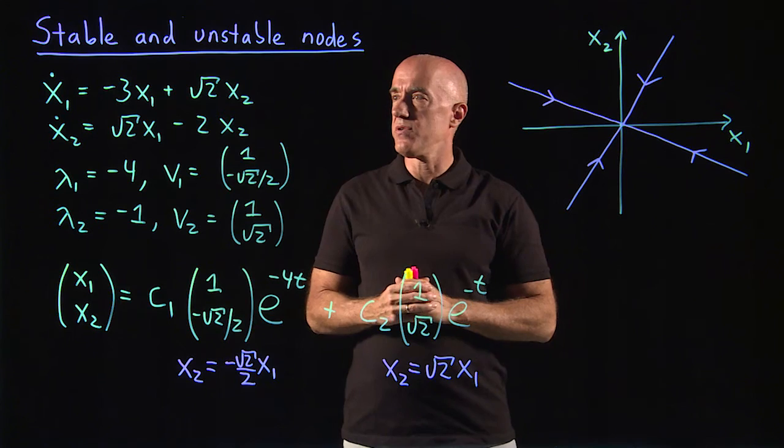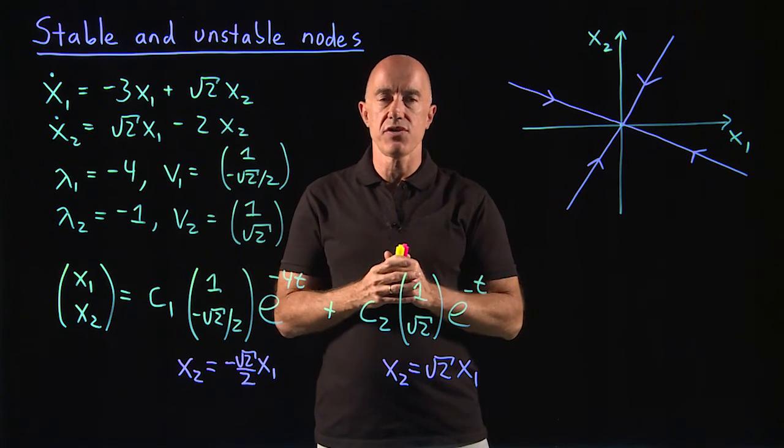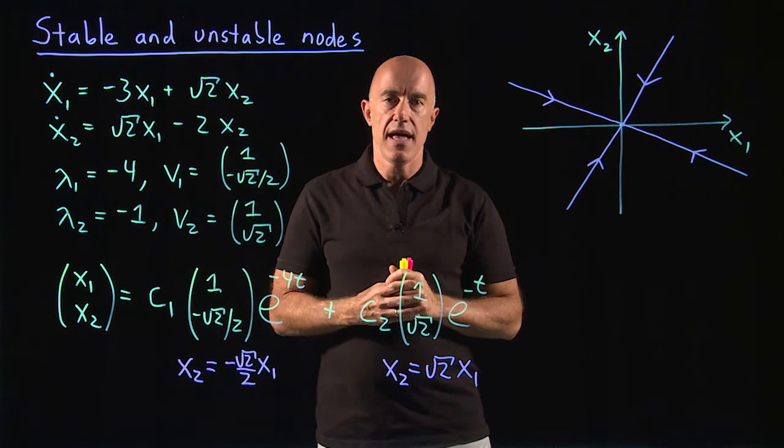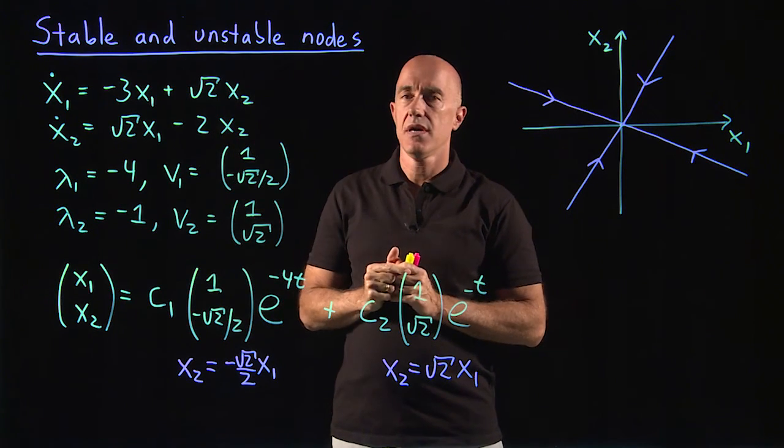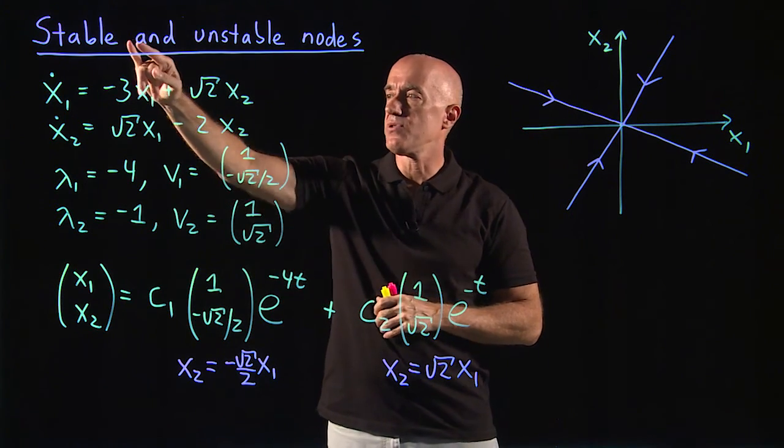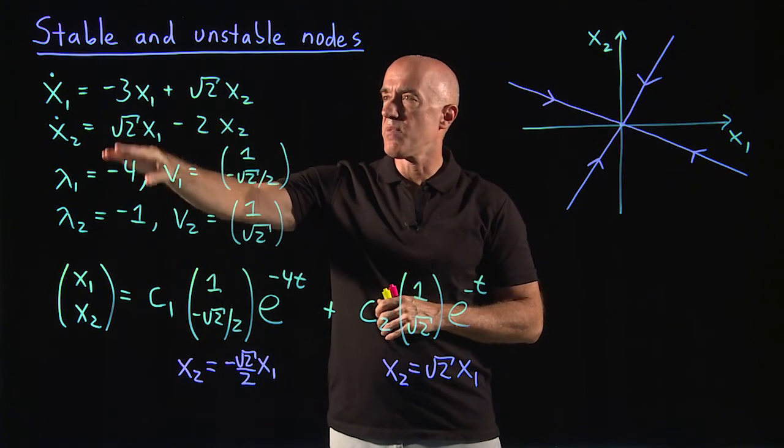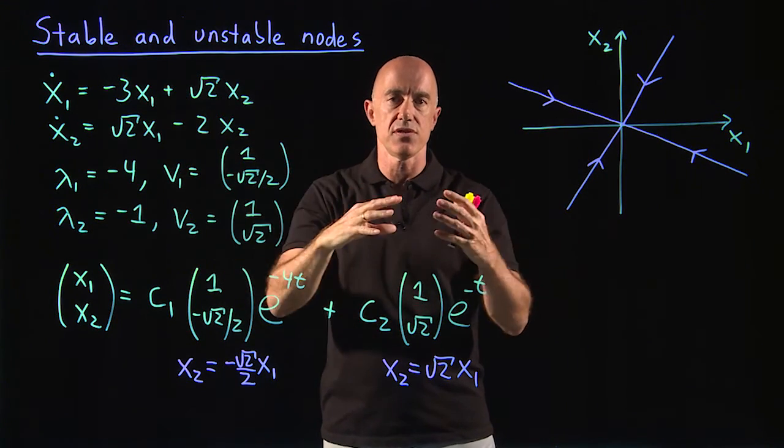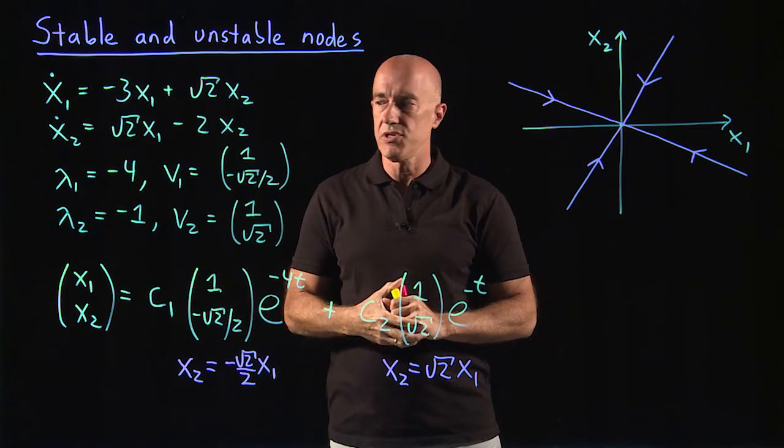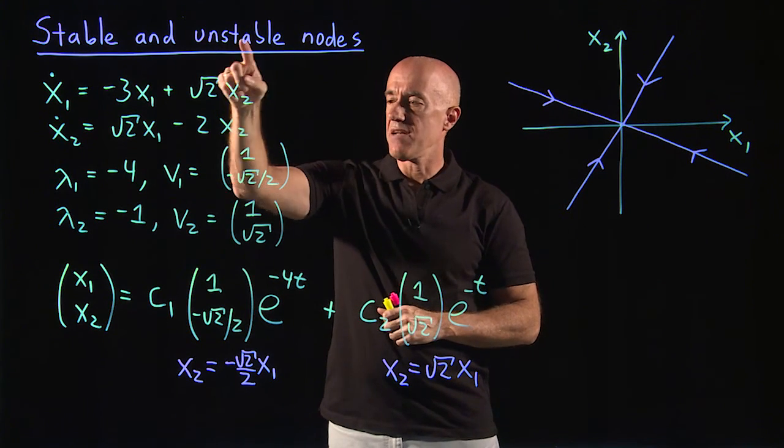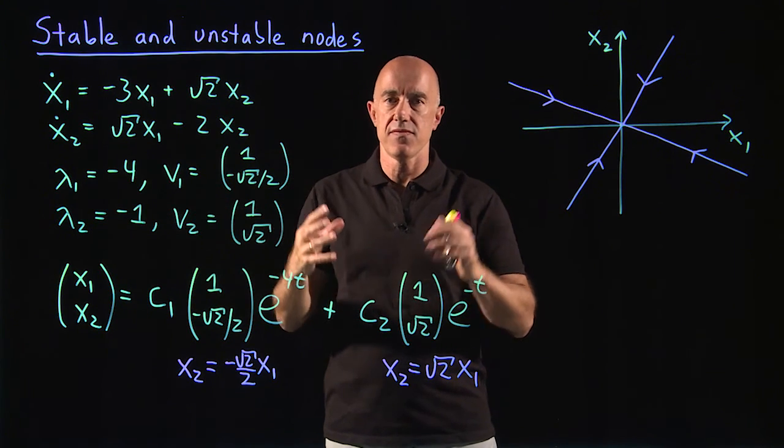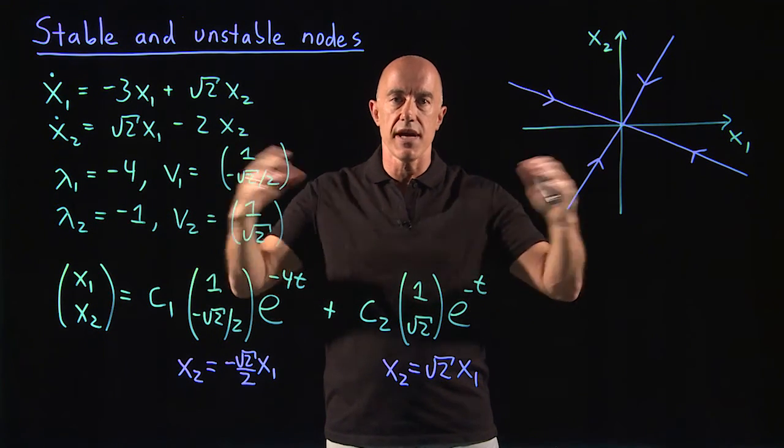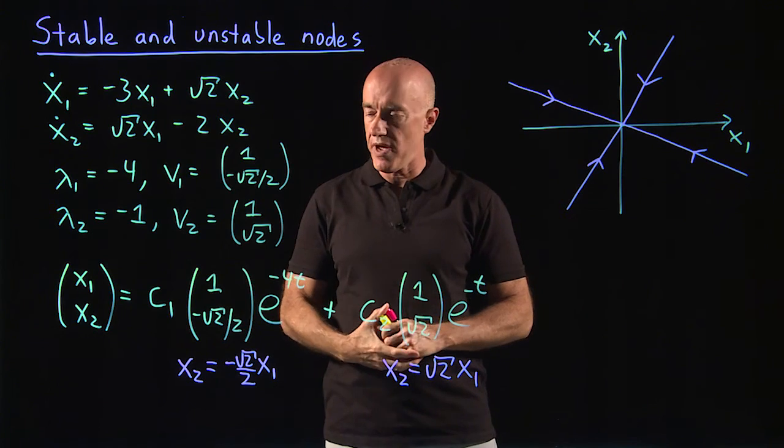Okay, so let me review. So in this video, I showed you how to sketch a phase portrait associated with a node. If it's a stable node, the eigenvalues are both negative. All the solutions converge to the origin. If it's an unstable node, the two eigenvalues will be both positive, and all the solutions will diverge from the origin, move away from the origin.